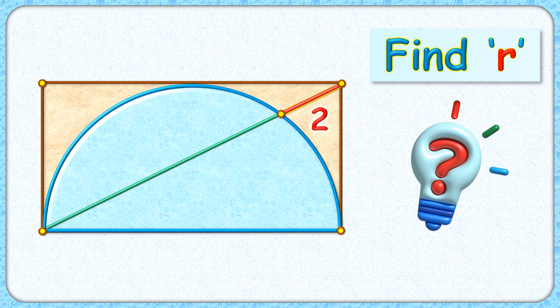This question looks fun to solve. We're given a rectangle with a semicircle inside it. The diagonal of the rectangle is drawn, and the length of this red line segment is given as 2 centimeters. The exciting part is, with this limited data, we have to find the radius of this semicircle.